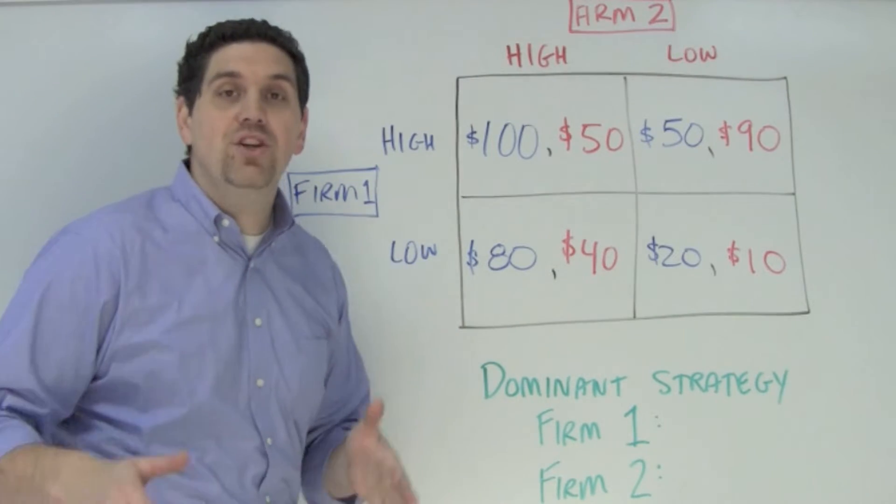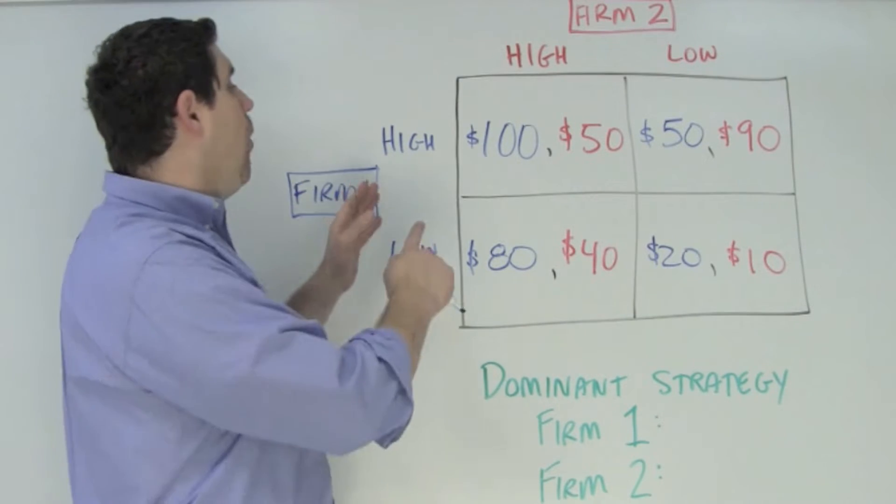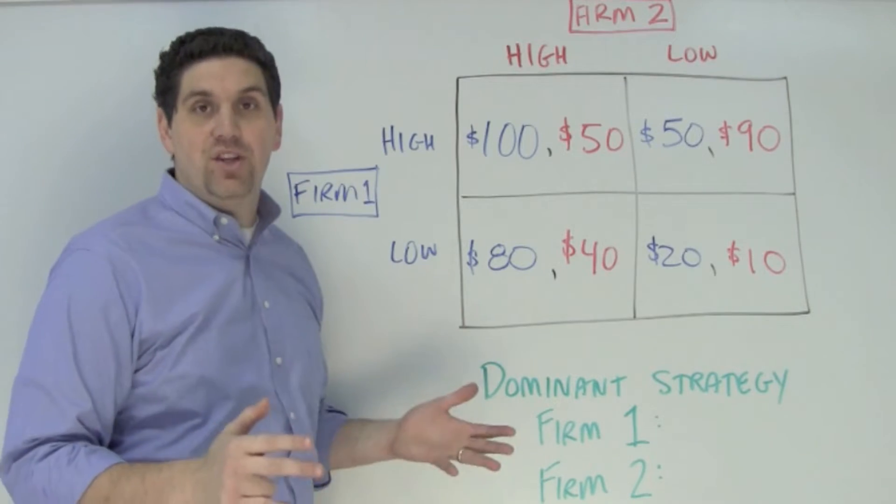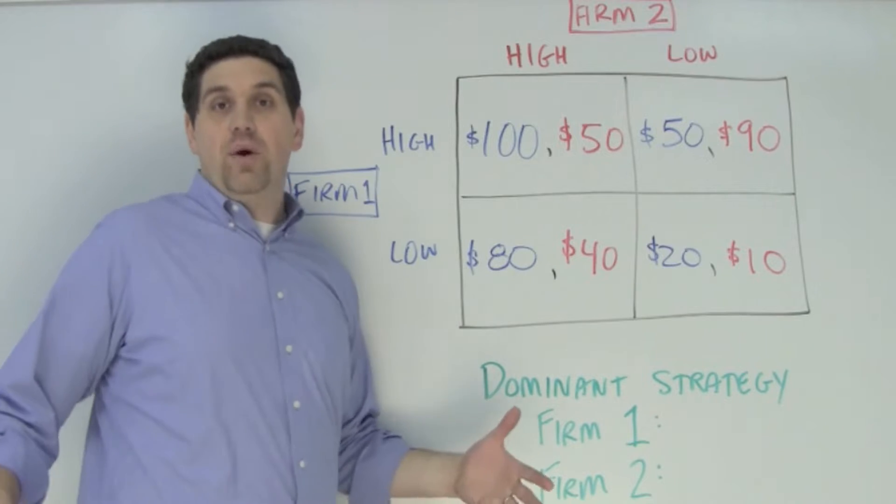A dominant strategy is the strategy a firm should choose regardless of what their opponent does. So if firm one should always price high all the time no matter what, then that's their dominant strategy. If they should price high sometimes and low other times, then they don't have a dominant strategy.